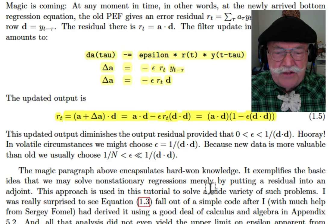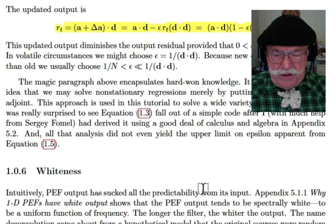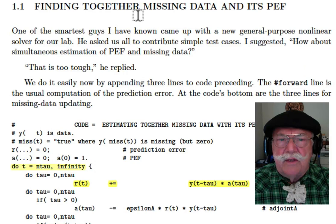I call this kind of magic, and it was a result of a lot of hard-gained knowledge. There's an appendix in the book which derives this using lots of calculus. It took me a long time, and I needed a lot of help. It talks about the whiteness here. It says the PEF output is white, and let's go on. Let's look for some missing data at the same time we're finding the prediction error filter. That's a nonlinear problem.